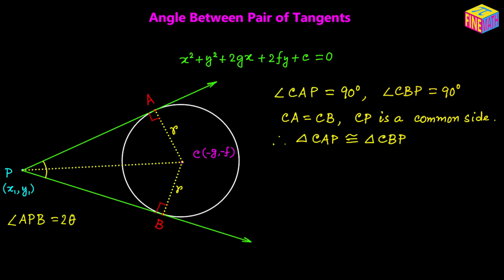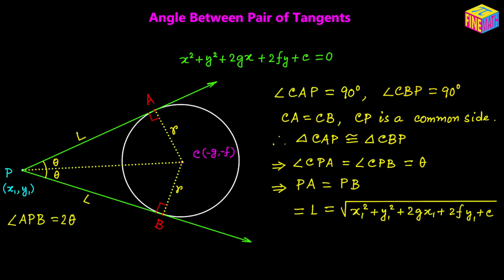Each of those angles, CPA and CPB, will be equal to theta. Also, PA equals PB — that is the length of the tangent. From a previous video, we know how to calculate the length of the tangent drawn from an external point to a given circle. The formula is: length equals square root of x₁² plus y₁² plus 2Gx₁ plus 2Fy₁ plus C.